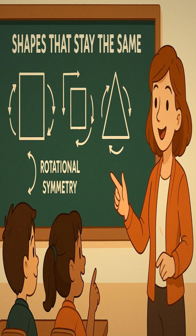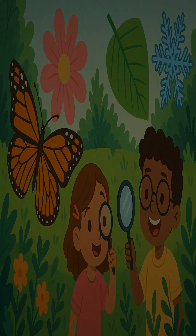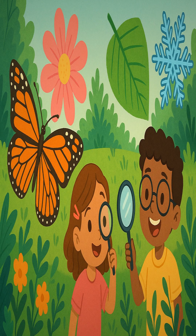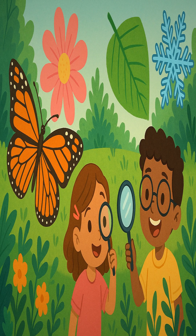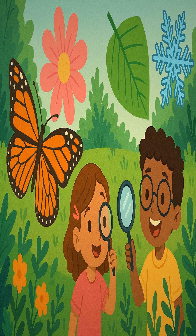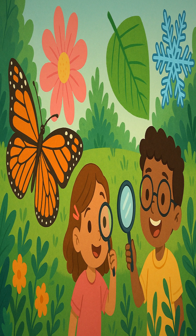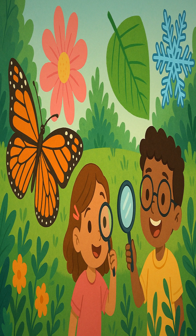Look around you — nature is full of symmetry! A butterfly's wings, a flower's petals, the shape of a leaf, even a snowflake — they all look the same on both sides. That's how nature keeps everything balanced and beautiful.